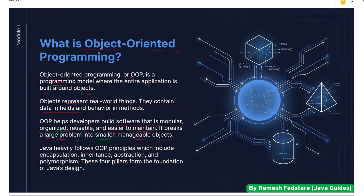Java heavily follows OOP principles, which include encapsulation, inheritance, abstraction, and polymorphism. These four pillars form the foundation of Java's design.